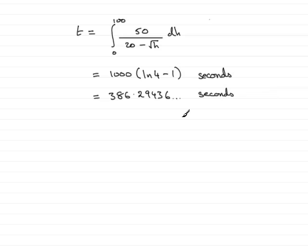And to turn it into minutes, we need to divide this number by 60. And if you divide that by 60, you'll find that you get 6.4382 and so on minutes.